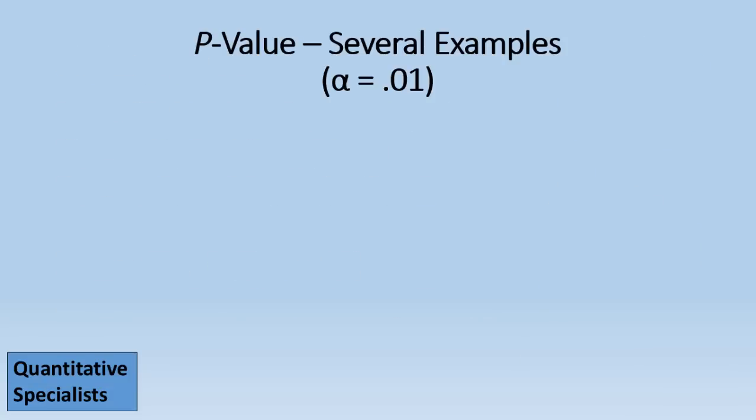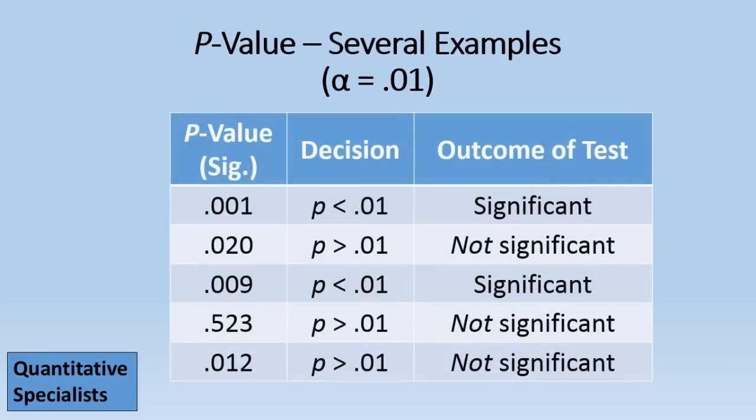So let's go ahead and take a look at some examples as well with alpha .01. So here we have a p of .001, that's definitely less than alpha of .01, so it's significant. .02, it's close, but it's greater than .01, so it's not significant.